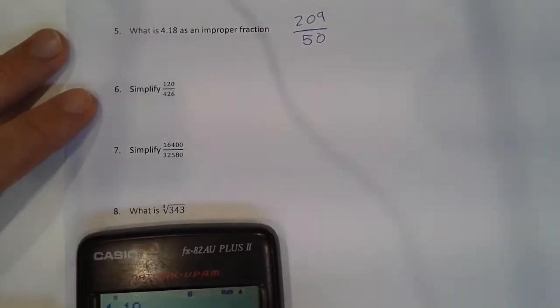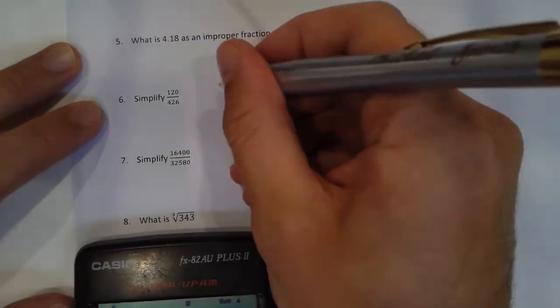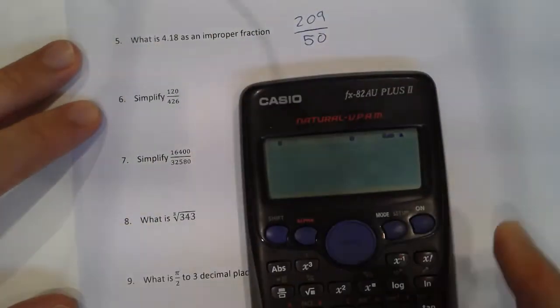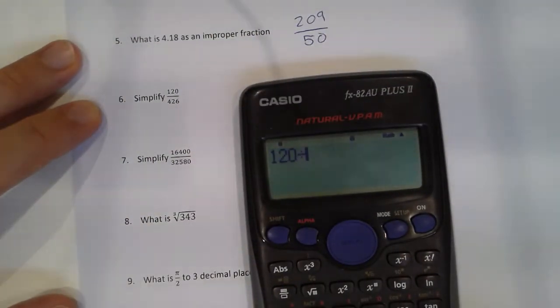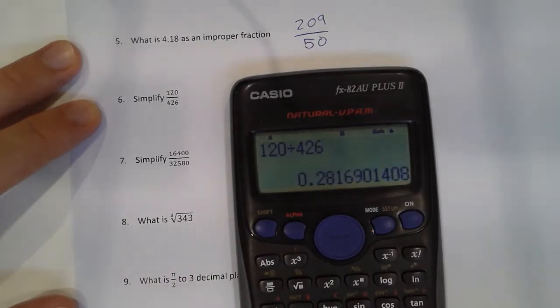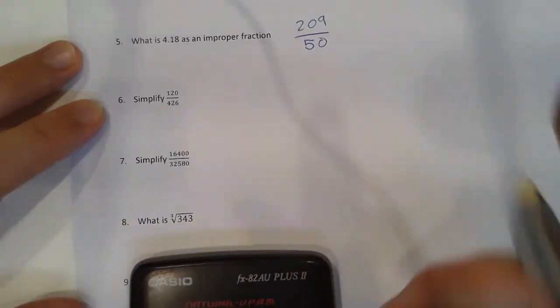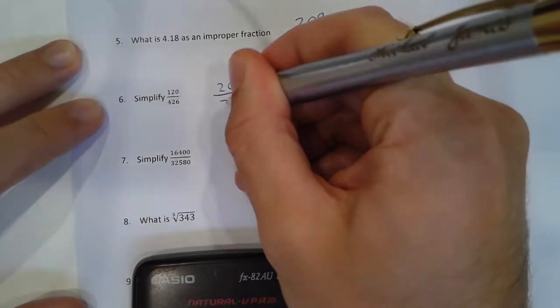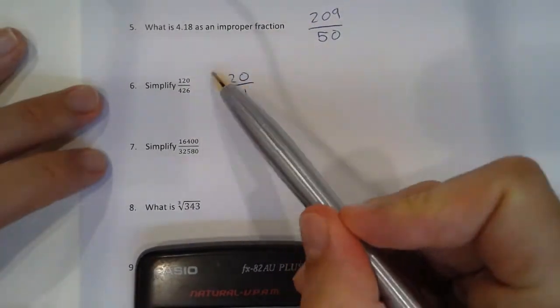Number 6. Simplify a fraction. Well, if I just type it in, 120 divided by 426, it gives me the answer as a decimal. So if I wanted that as a fraction in its simplest form, it's 20 over 71. Because you wouldn't want to manually simplify that fraction.